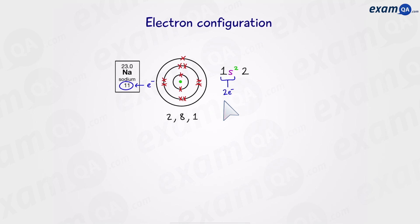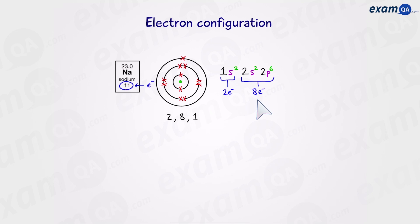Now we move to the second shell. Again we start with an s subshell and put 2 electrons. However, we need 8 electrons in the second shell. So in the second shell we're also going to have a p subshell, and we fill this with 6 electrons — giving us 8 in total. Moving on to the third shell, we start with an s subshell and this time put only 1 electron. That's the last electron on the final shell. So that's how we represent electron configuration at A-level.